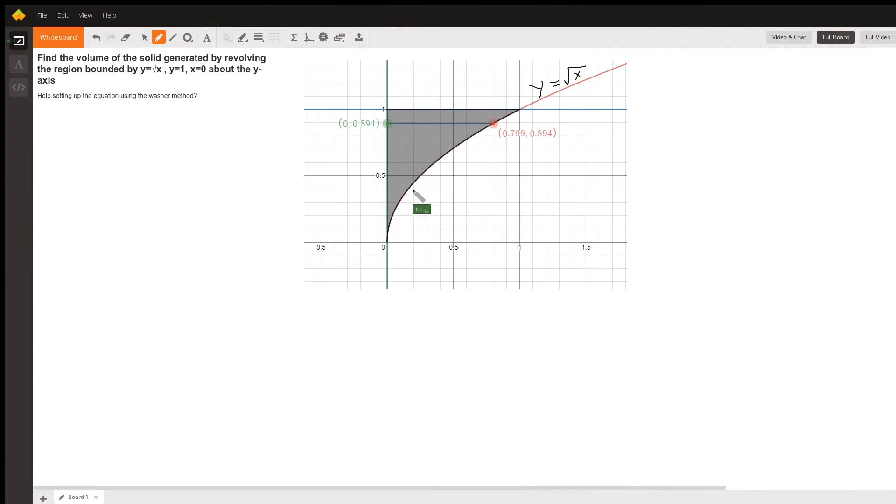Here's the graph of y equals the square root of x. The blue horizontal line is the graph of y equals 1, and this green vertical line, x equals 0. This region is what we're revolving about the y-axis, which is also the line x equals 0.